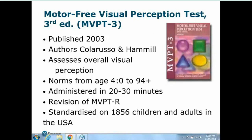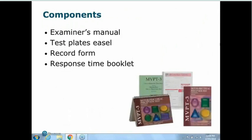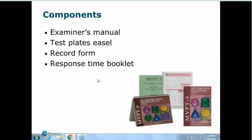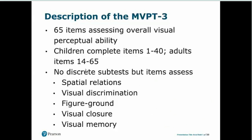The MVPT3 takes about 20 to 30 minutes to administer and is a revision of the MVPT-R. It was standardised in America on a large sample of children and adults. Components include the examiner's manual, the test plates on an easel, the record form, and a response time booklet. The test consists of 65 items mixing different kinds of visual perceptual challenges: spatial relations, visual discrimination, figure ground, visual closure, and visual memory items — but not organised into discrete subtests.